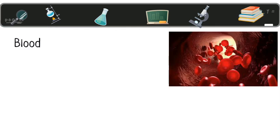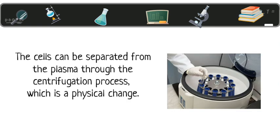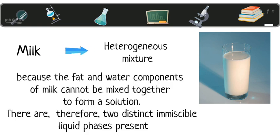Blood is a heterogeneous mixture because the blood cells are physically separate from the blood plasma. The cells can be separated from the plasma through the centrifugation process, which is a physical change. Milk is considered a heterogeneous mixture because the fat and water components of milk cannot be mixed together to form a solution. There are therefore two distinct invisible liquid phases present.